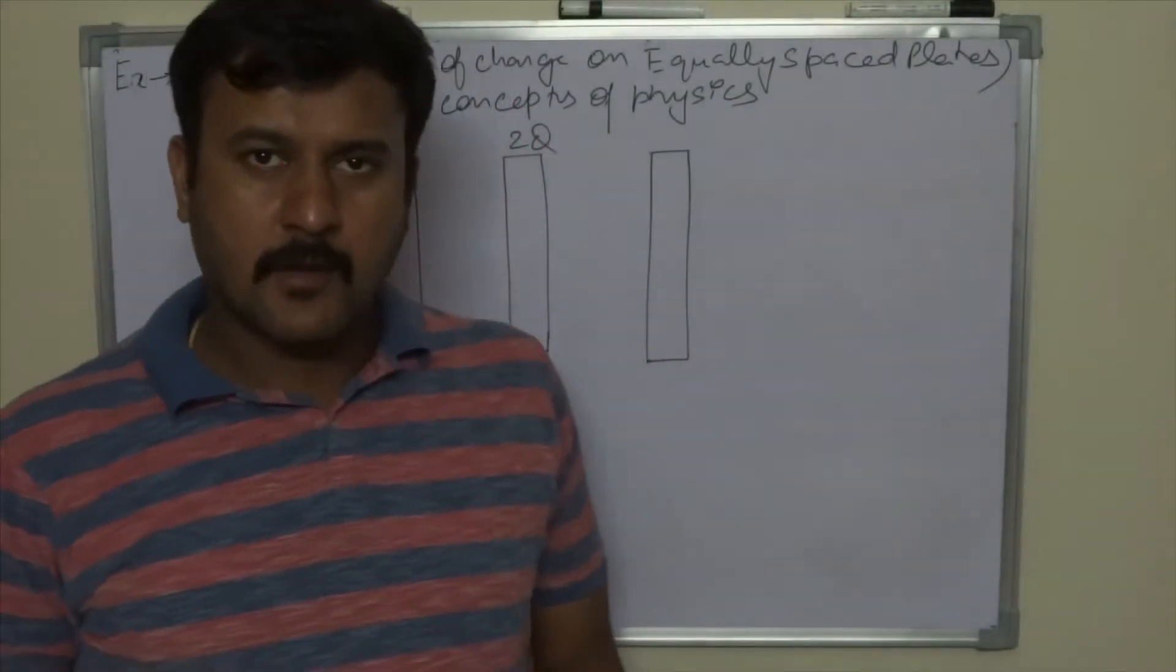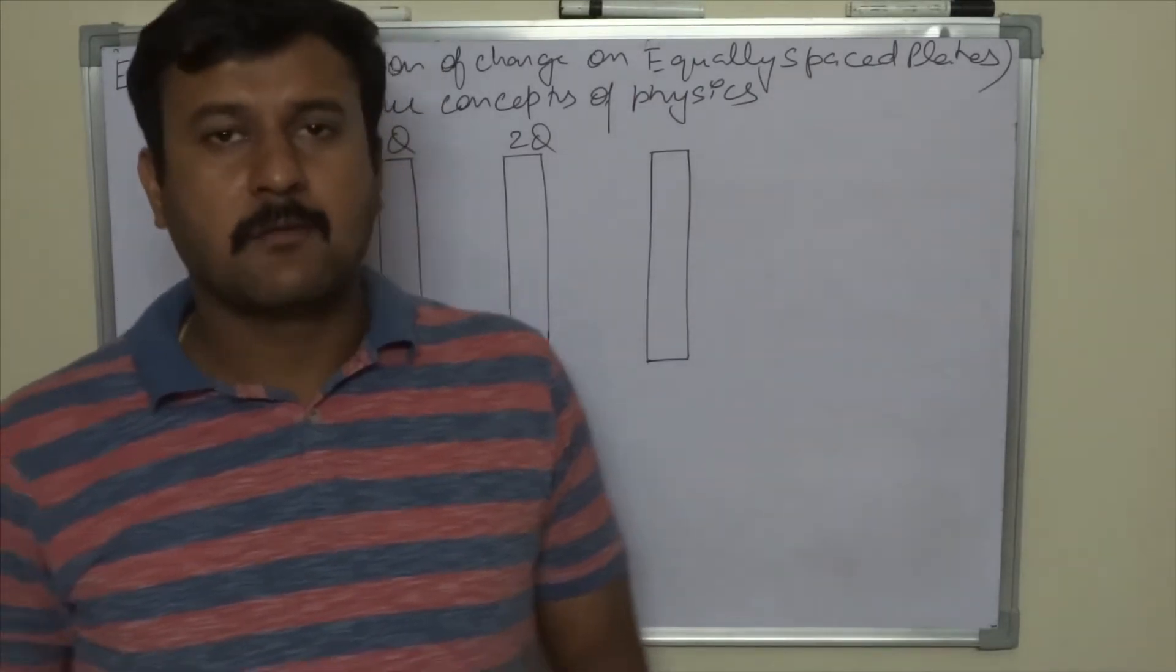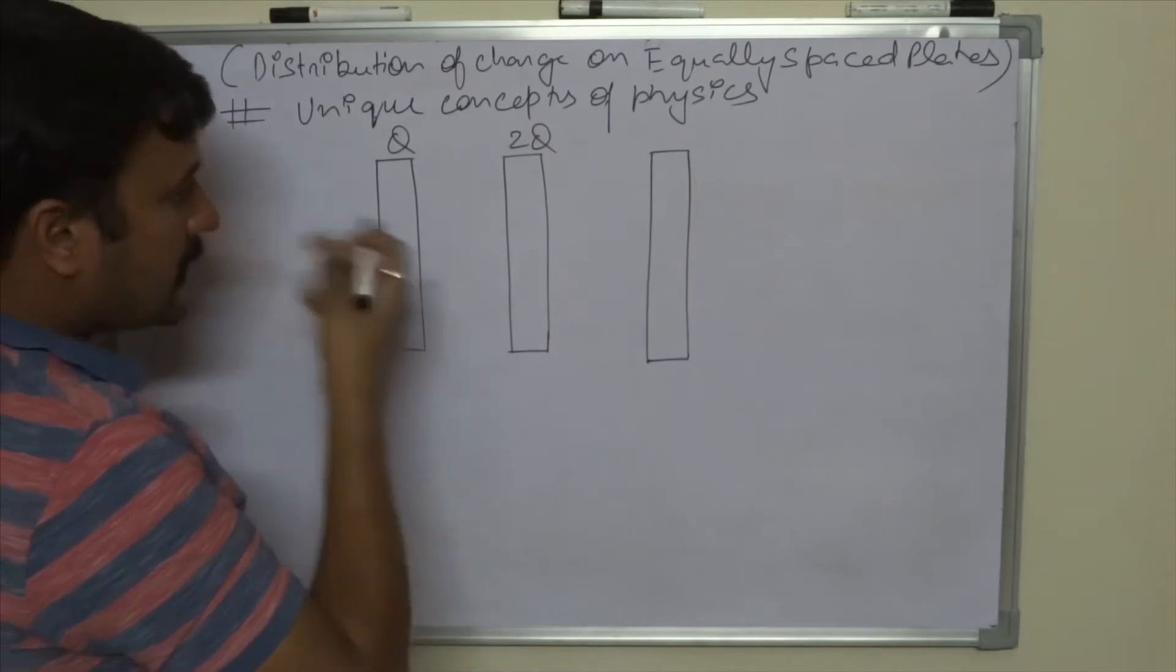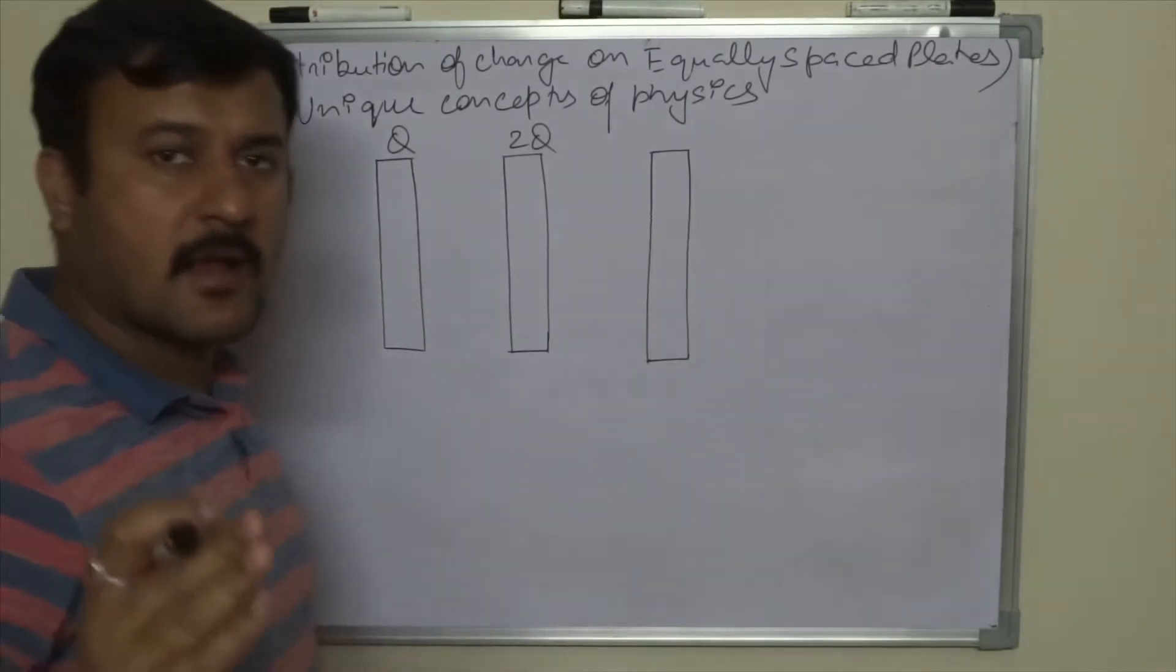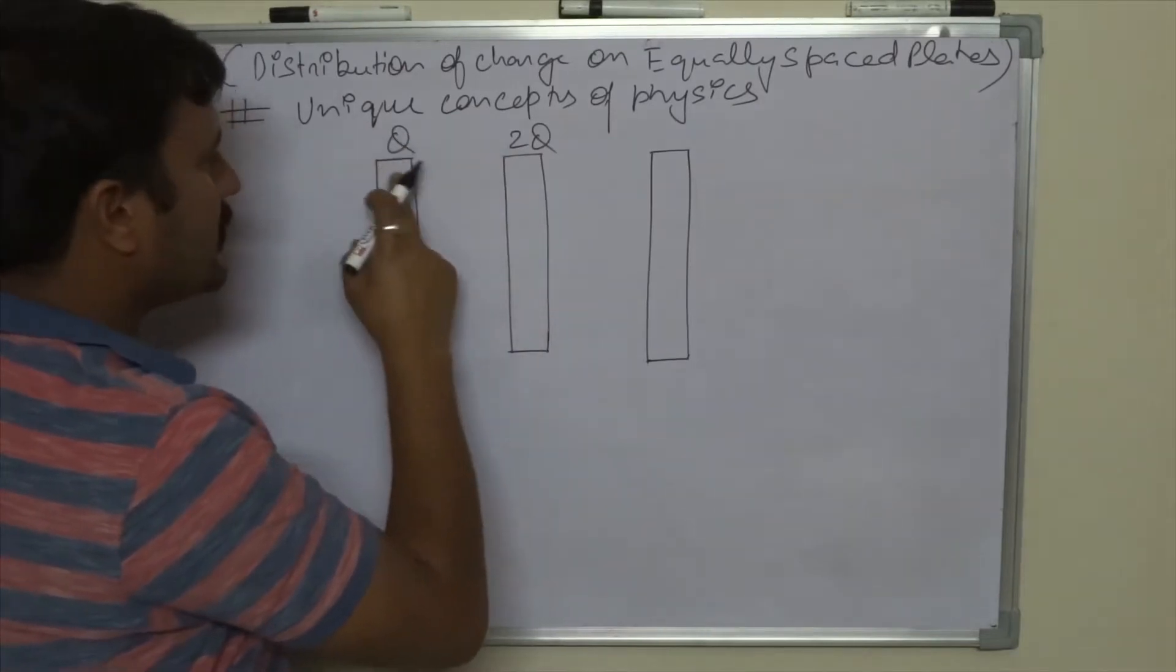I am here with another example of charge distribution on plates, this time with three plates. We have three conducting metallic plates. Two of them have some charge: this one has Q and this one has 2Q.